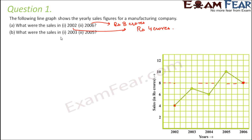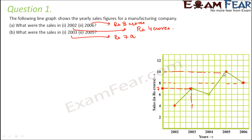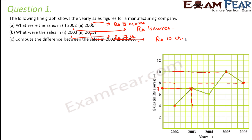What were the sales in 2003 and 2005? For 2003, the point is exactly midway between 6 and 8 on the y-axis, so the sales were rupees 7 crores. For 2005, the corresponding value is 10, so the sales in 2005 were rupees 10 crores.